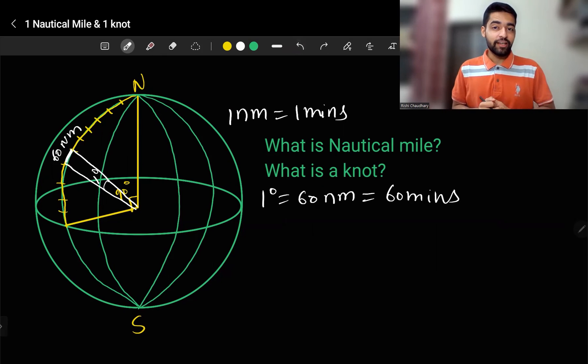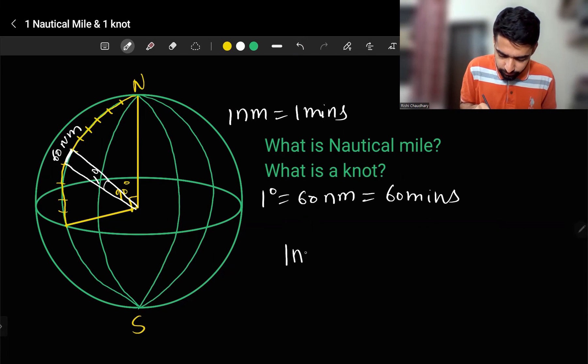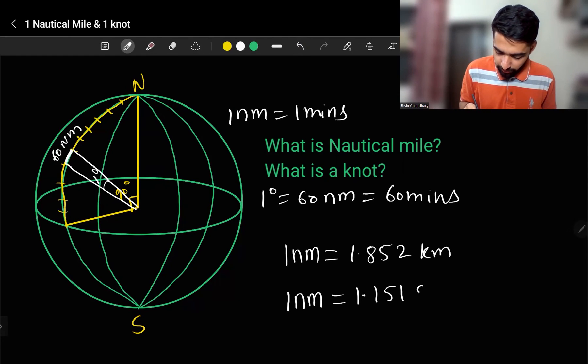Now the next question arises: how to convert nautical miles into statute miles or kilometers? So one nautical mile is 1.852 kilometers and one nautical mile is also equal to 1.151 statute miles.